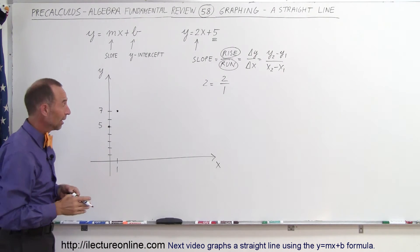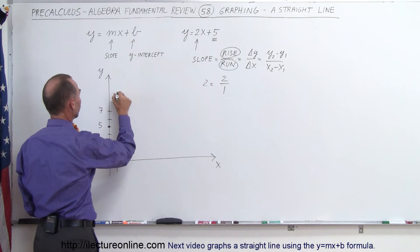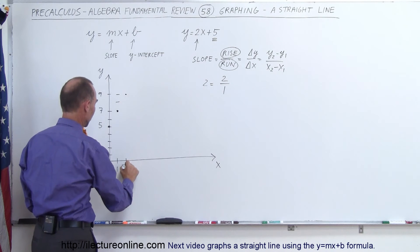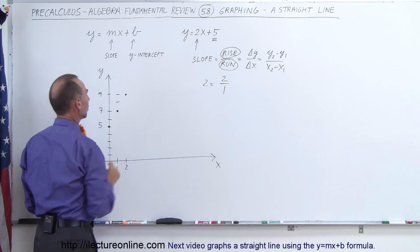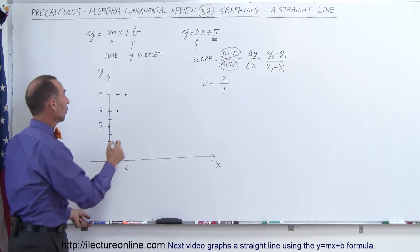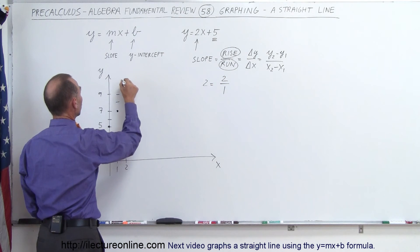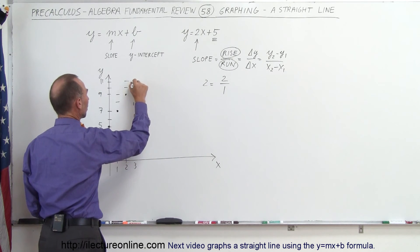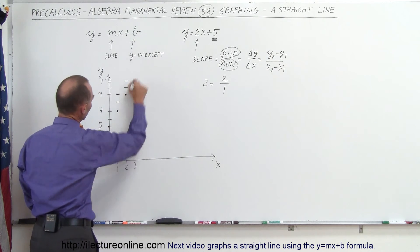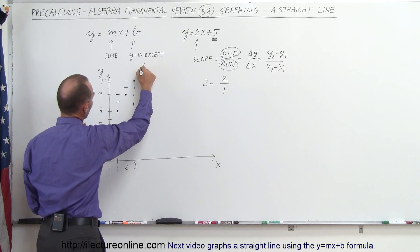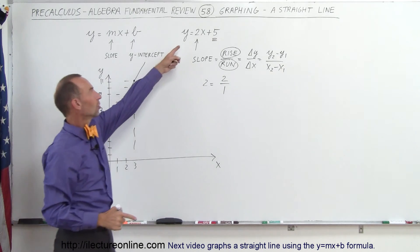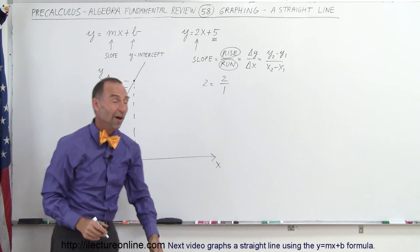If you want to do it again, another rise of 2: 1, 2, that brings us to positive 9, and another run to the right brings us to x equals 2. Put another dot there. You can do it again: rise another 2 units, 1, 2, that brings us to 10, 11, and one run over here brings us to the number 3. You can see, you put another point there. You can just keep doing that, and all those dots will fall on the same straight line. If you connect them all, you have the line that's represented by the function y equals 2x plus 5.